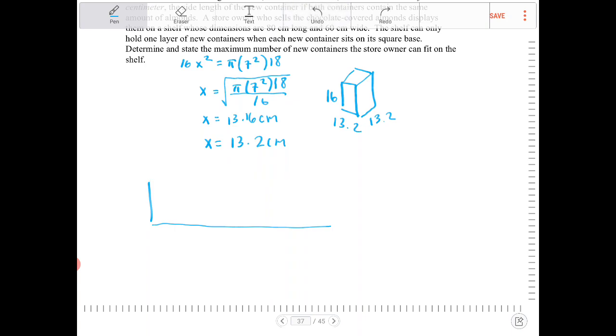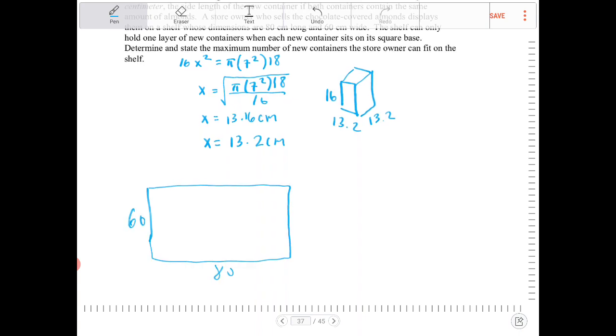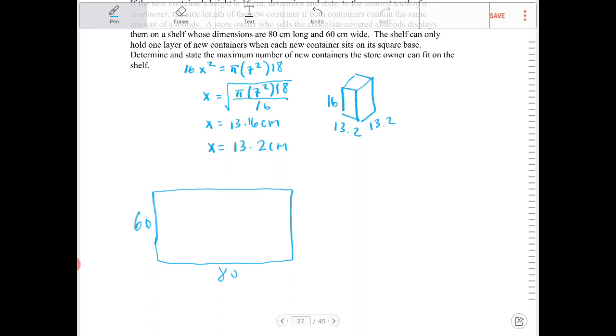Whoops, it's a little too exaggerated, so I'm going to make it like that. So I have 80 and 60. If we take a look at this, 13.2 can go into 60 how many times?